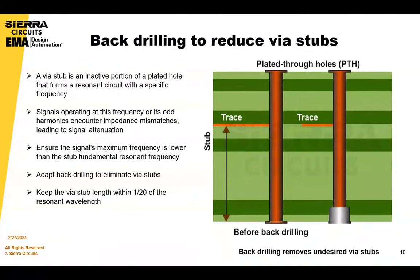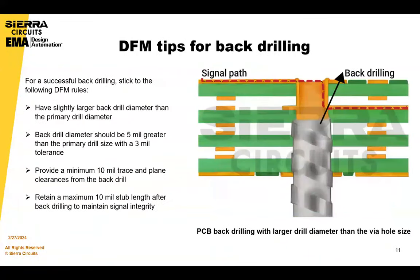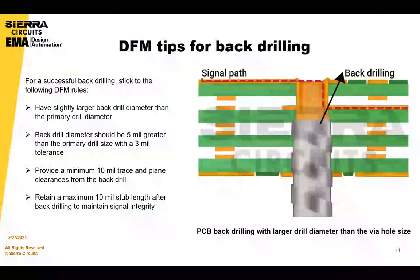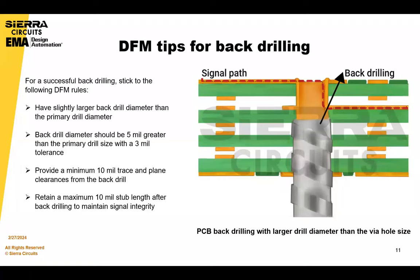You can keep the VIA stub length at a minimum — less than 1/20 of the resonant wavelength. DFM tips for back drilling are important to know. Ensure that your back drill is slightly larger than the original drill — typically 5 mils over the drill size with a tolerance of 3 mils. You also probably need 10 mils of clearance. These are standard rules and guidelines, but we can definitely do better than standard.